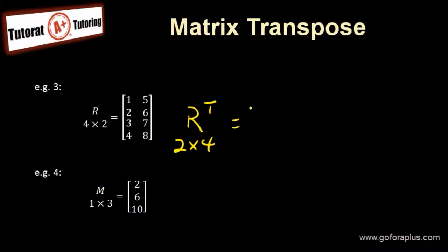The first row becomes the first column: one, five. Then two, six, three, seven, four, eight. This is a matrix that is 2 by 4.